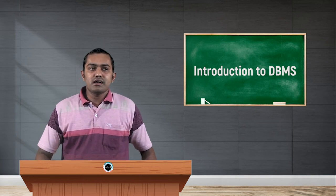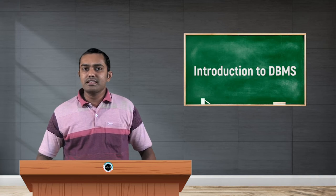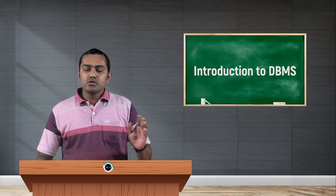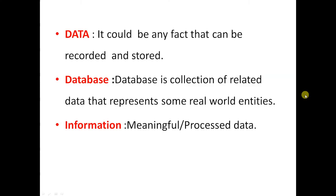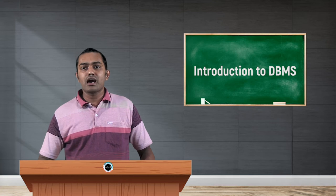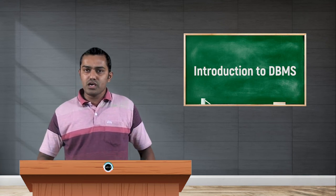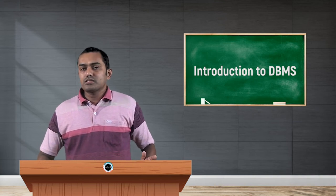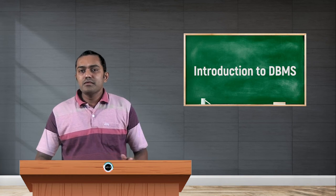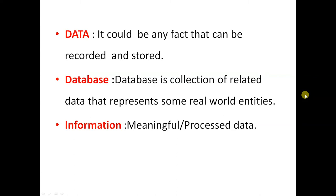In our definition, a database is a collection of related data. What does related data mean? For example, one database collects details about employees whose age is less than 30. Another database maintains records about cars and their prices. Another maintains details about software companies and their locations. These three sets of data have no relation to each other, which is why when making a database we need to collect related data.